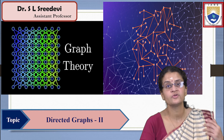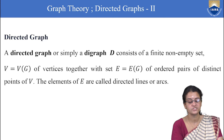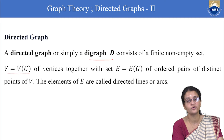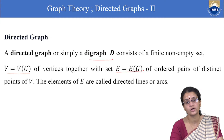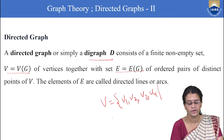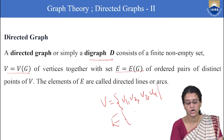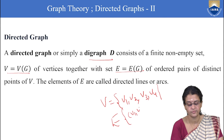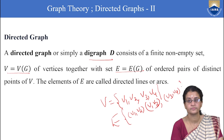Let us see once again and refresh what is a Directed Graph. A Directed Graph or simply a digraph D consists of a finite non-empty set V of vertices together with set E of ordered pairs of distinct points of V. For example, if V = {V1, V2, V3, V4}, then the edge set consists of ordered pairs like (V1,V2), (V1,V3), (V3,V4), and so on.